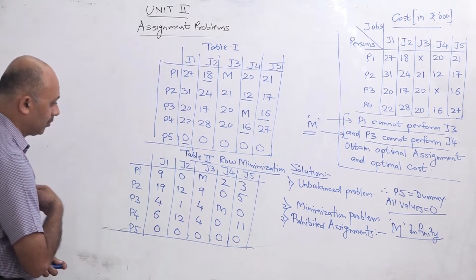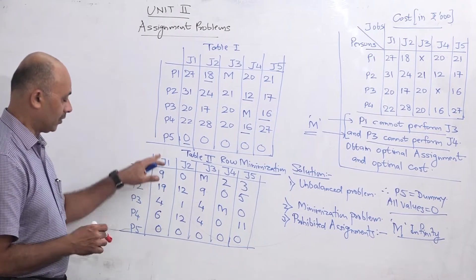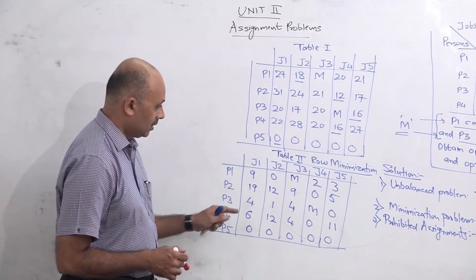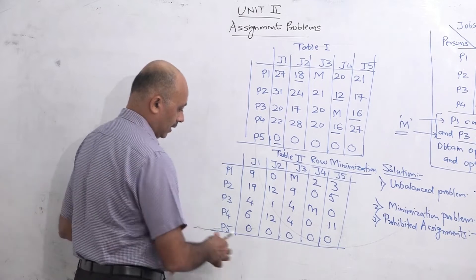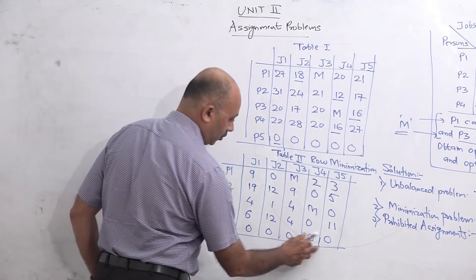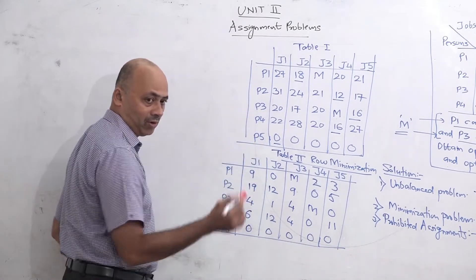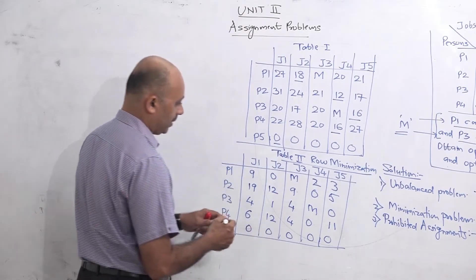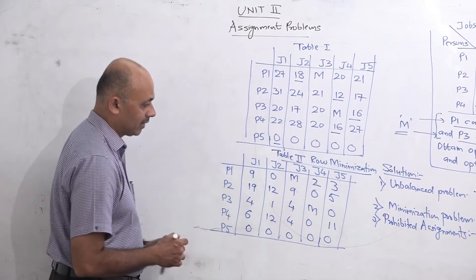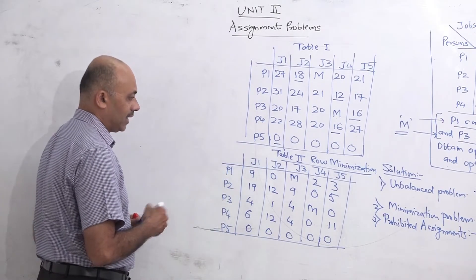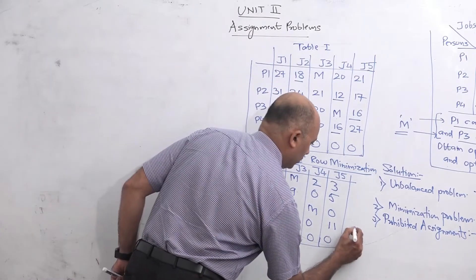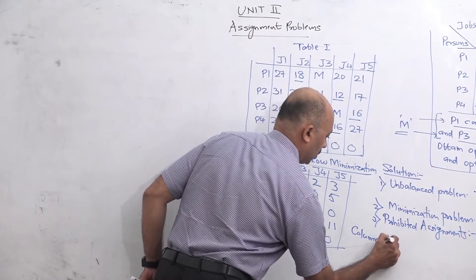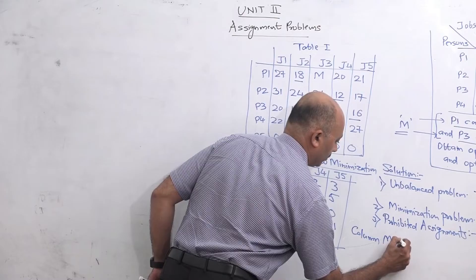Normally after row minimization the next step is column minimization. But if you observe here, in every column there is already a zero, so the minimum value of every column is zero. This means even if you do column minimization the table will remain the same, so column minimization is not required.